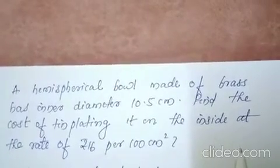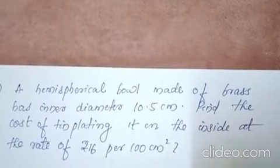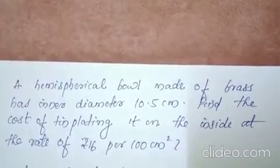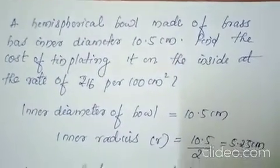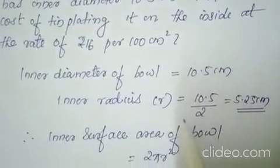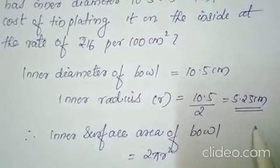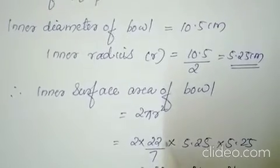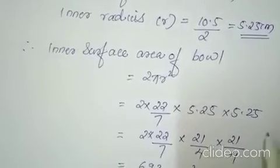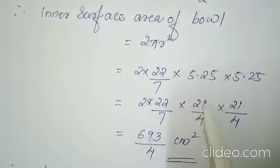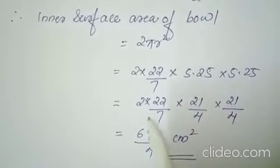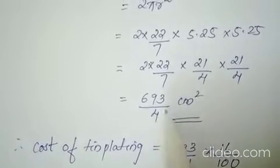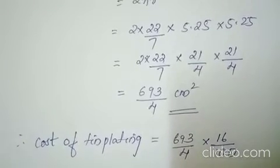The fifth question: a hemispherical bowl is made of brass, has inner diameter 10.5 cm. Find the cost of tin plating it at the rate of Rs. 16 per 100 cm square. Inner diameter is given as 10.5 cm. Since diameter is given, find the radius first: r equals 10.5 by 2, which gives 5.25 cm. Then find the inner surface area of the bowl using the formula 2 pi r square — 2 into 22 by 7 into 5.25 into 5.25. 5.25 means 525 by 100. While cutting, you will get 21 by 4 into 21 by 4, giving 6.93 into 4. No need to divide right now because we have to find the cost.